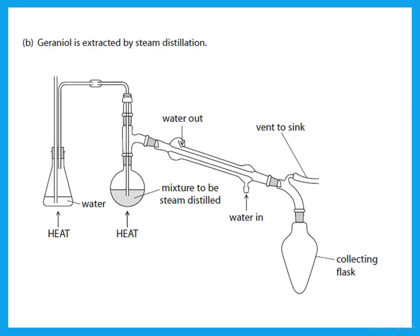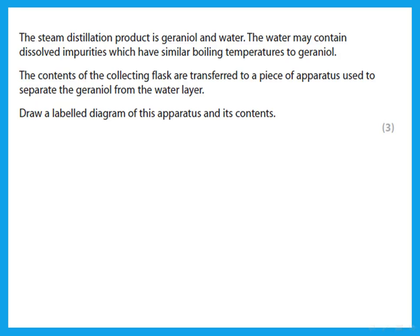The compound is extracted by steam distillation. The steam distillation product is geraniol and water. The water may contain dissolved impurities which have similar boiling temperatures to geraniol. The contents of the collecting flask are transferred to a piece of apparatus used to separate the geraniol from the water layer. How do we separate an organic liquid from water? We use a separating funnel. If we go back to the table on density, the density of geraniol is less than one, so the geraniol would float on top of the water.